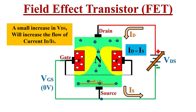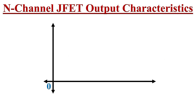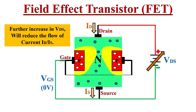A small increase in VDS will increase the flow of current ID and IS through the N-channel. If we represent this as ID versus VDS in a graph, initially it looks almost like a straight line because for low voltages the channel resistance is constant. This curve, ID versus VDS, is known as the output characteristic curve of the JFET.